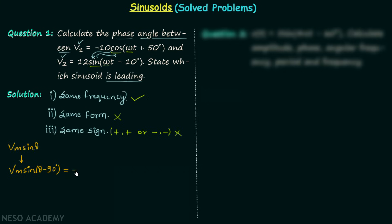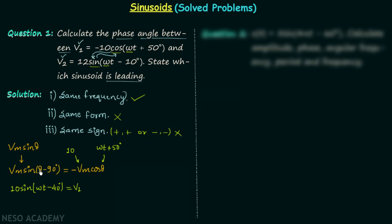This function Vm·sin(θ - 90°) is the same as negative Vm·cos(θ). Comparing negative Vm·cos(θ) with V1, which is negative 10·cos(ωt + 50°), we find Vm = 10 and θ = ωt + 50°. Therefore, substituting these values, 10·sin(ωt - 40°) is equal to V1. Putting θ = ωt + 50° gives ωt + 50° - 90° = ωt - 40°, so V1 = 10·sin(ωt - 40°).